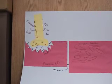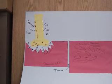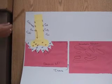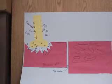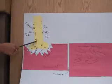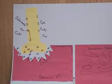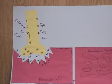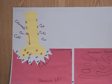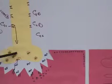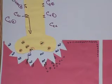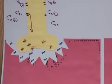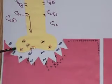Muscle contraction begins with an action potential traveling down the axon. As it moves, it opens calcium channels, allowing calcium to flood in. When the flood of calcium reaches the synaptic knob, vesicles containing acetylcholine are pushed to the end of the axon membrane, where they fuse with it and dump their contents into the synapse.